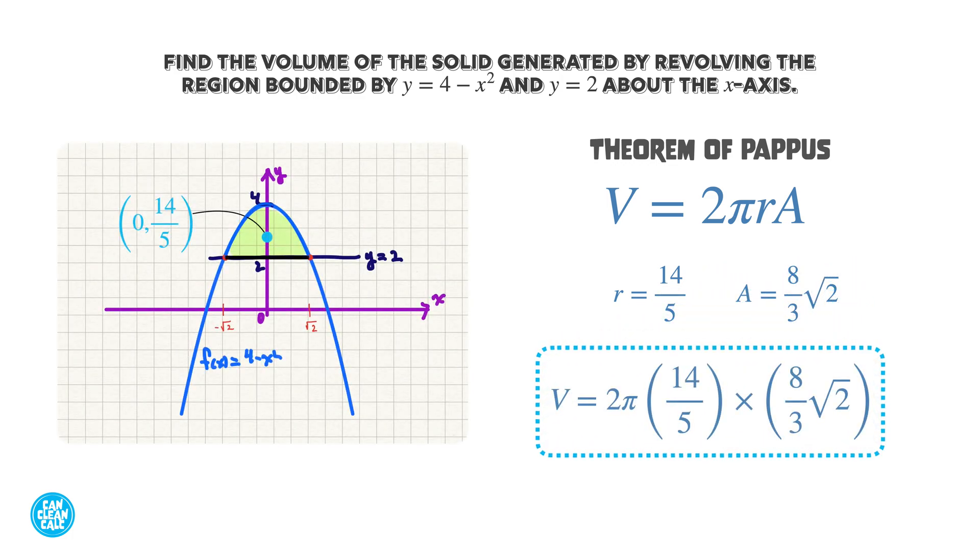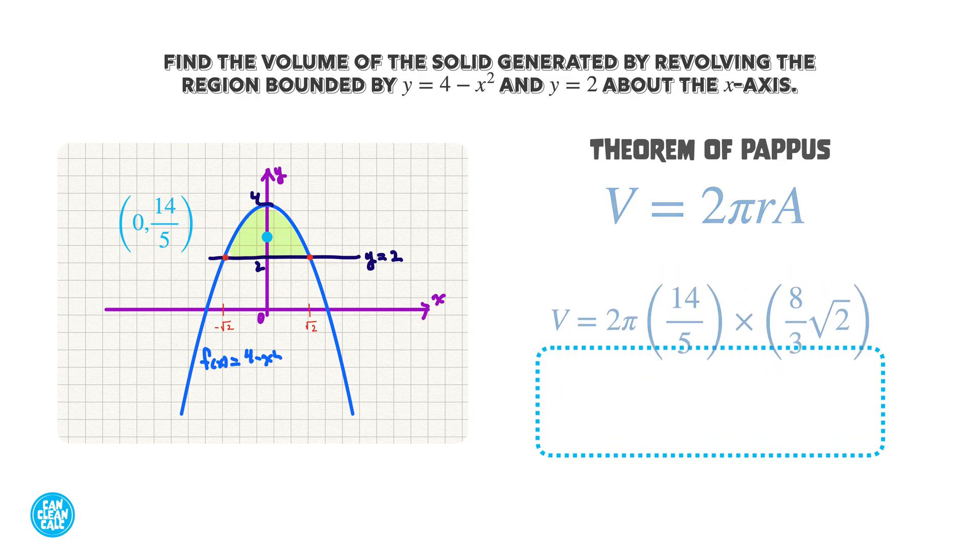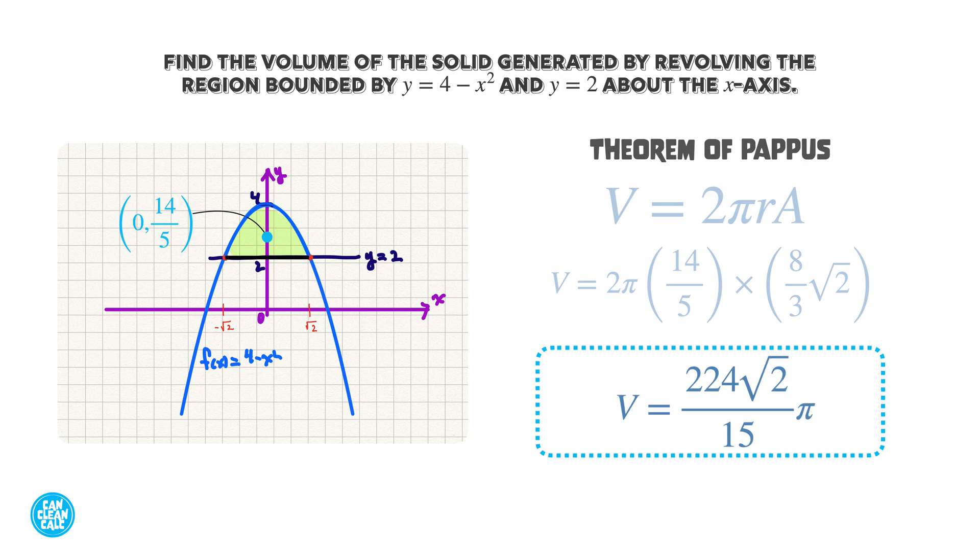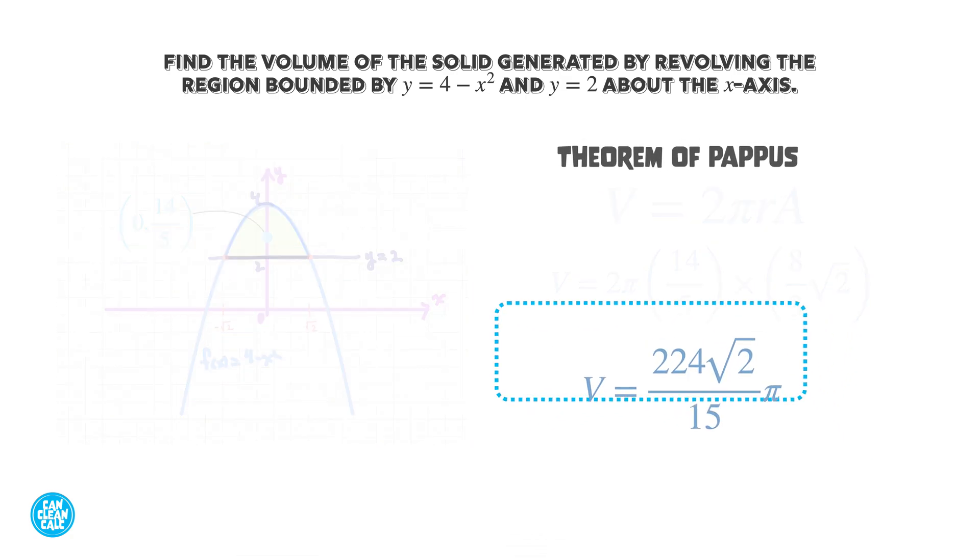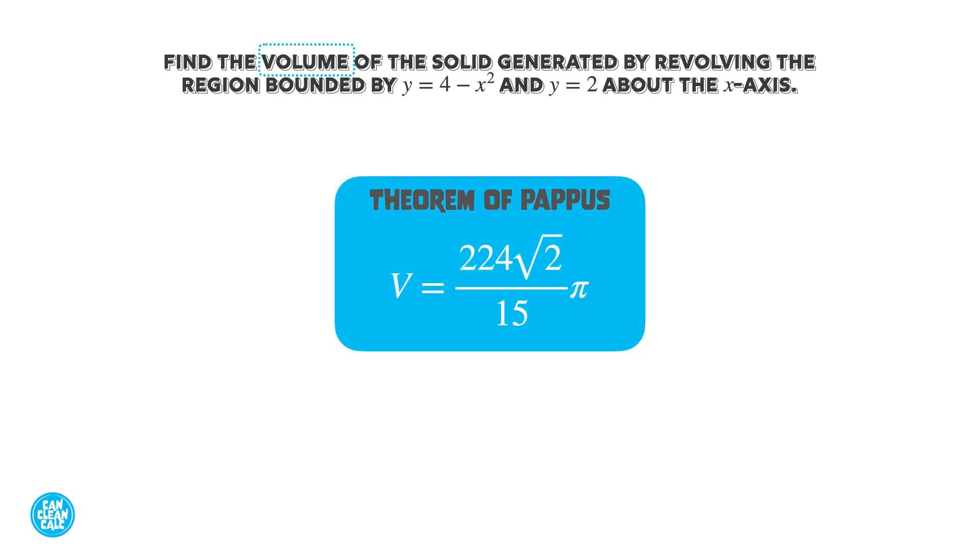Now, to finish our problem, it's simply plugging in the value for r and the value for A. We can clean that up and simplify to get V = (224/15)√2π. And that's it. We've computed volume thanks to the theorem of Pappus.